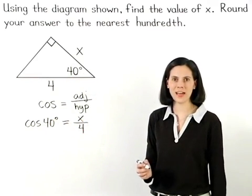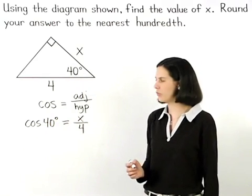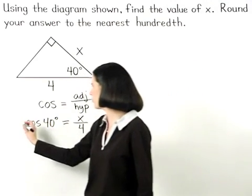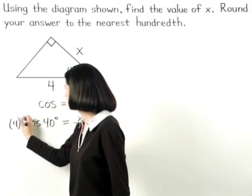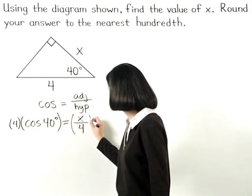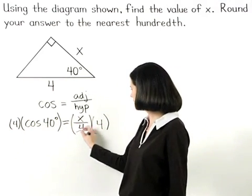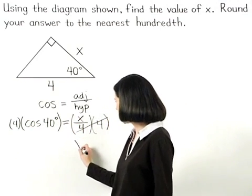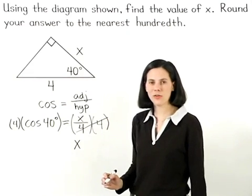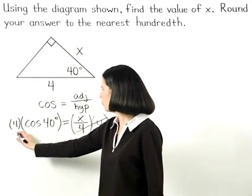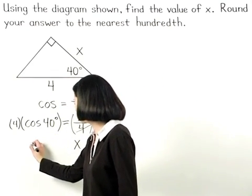Now, solving for x, we multiply both sides of the equation by 4. On the right side, the 4's cancel and we're left with x. And on the left side, we have 4 times the cosine of 40 degrees.